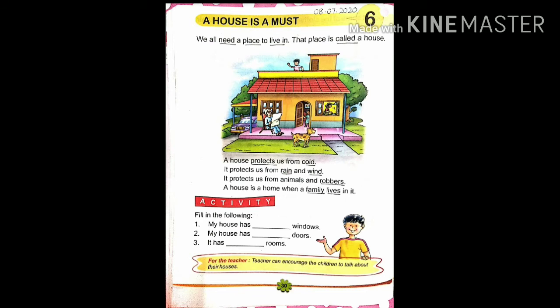Next, it protects us from animals and robbers. Animals सब को पता है बेटा — animals means जानवर — and robbers. Robbers होते हैं बेटा चोर, लुटेरे, जो रात को चोरी करने आते हैं. It protects us from animals and robbers. House हमारी किस चीज़ से protect करता है? Animals और robbers से भी हमारी सुरक्षा करता है.